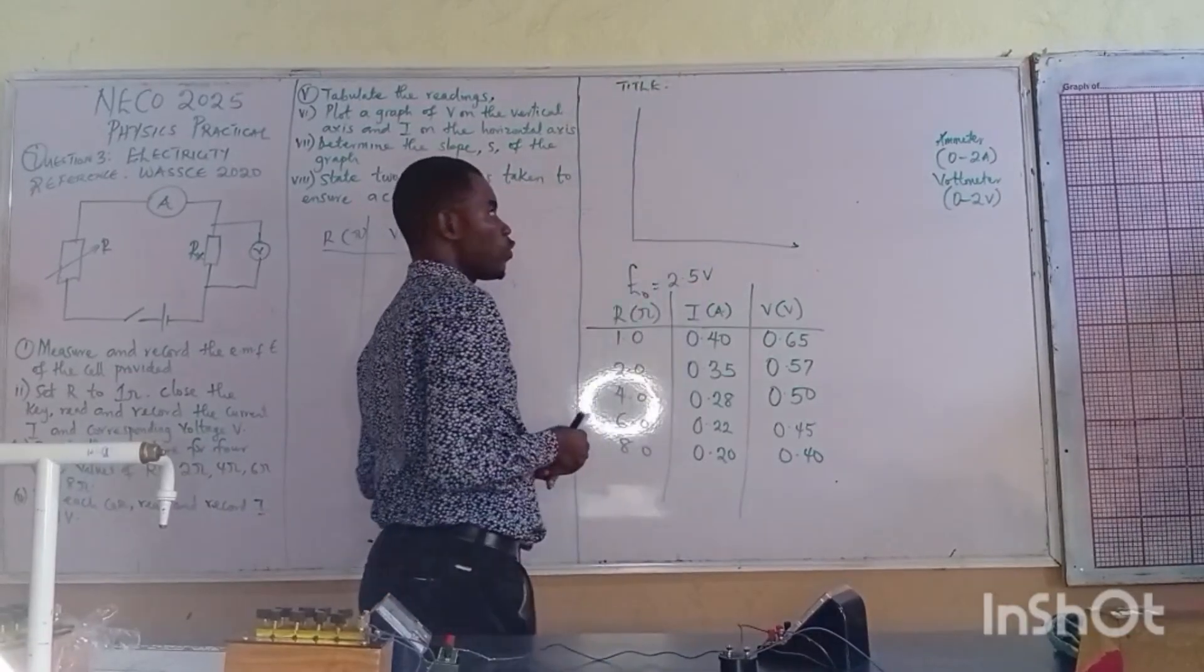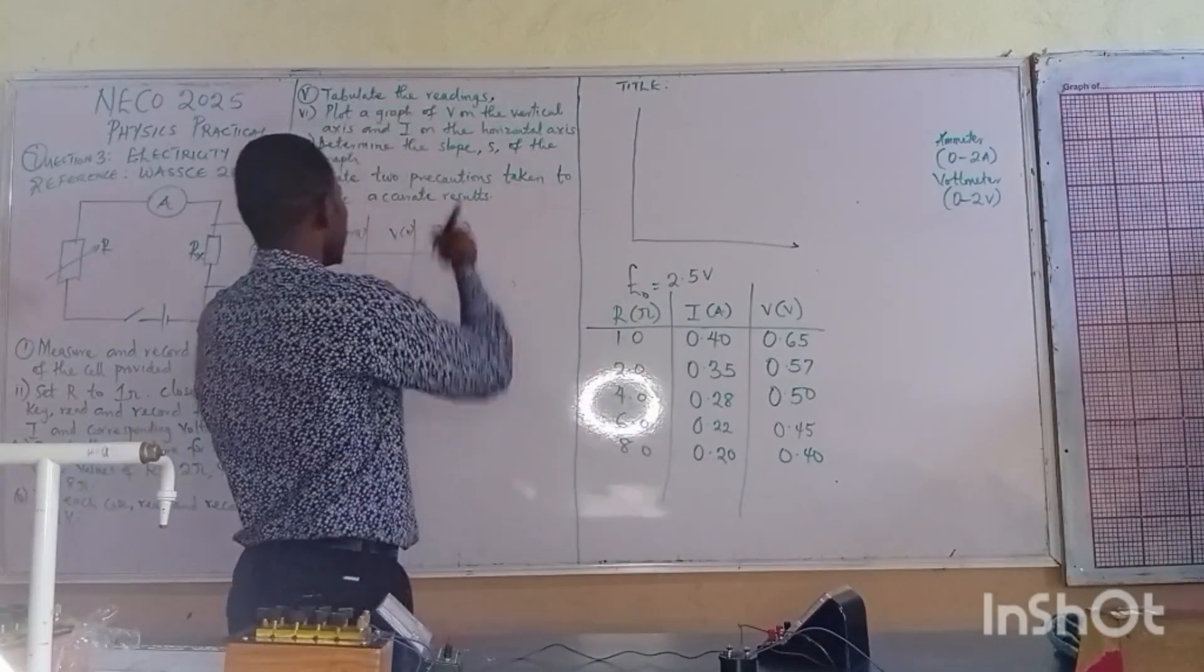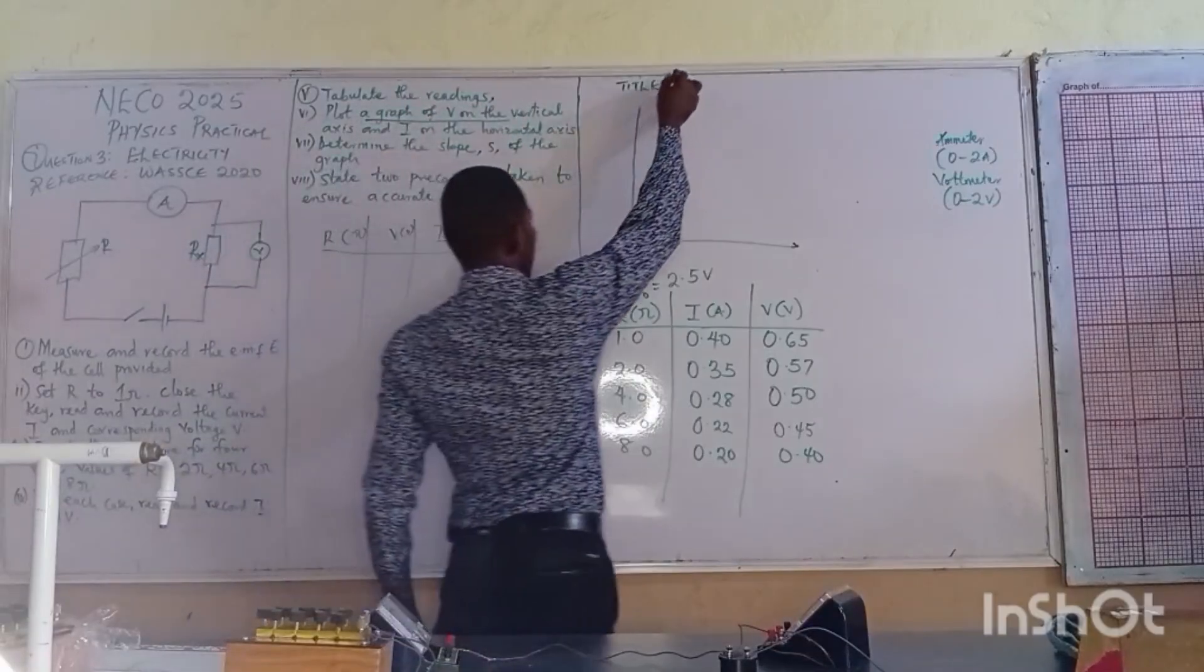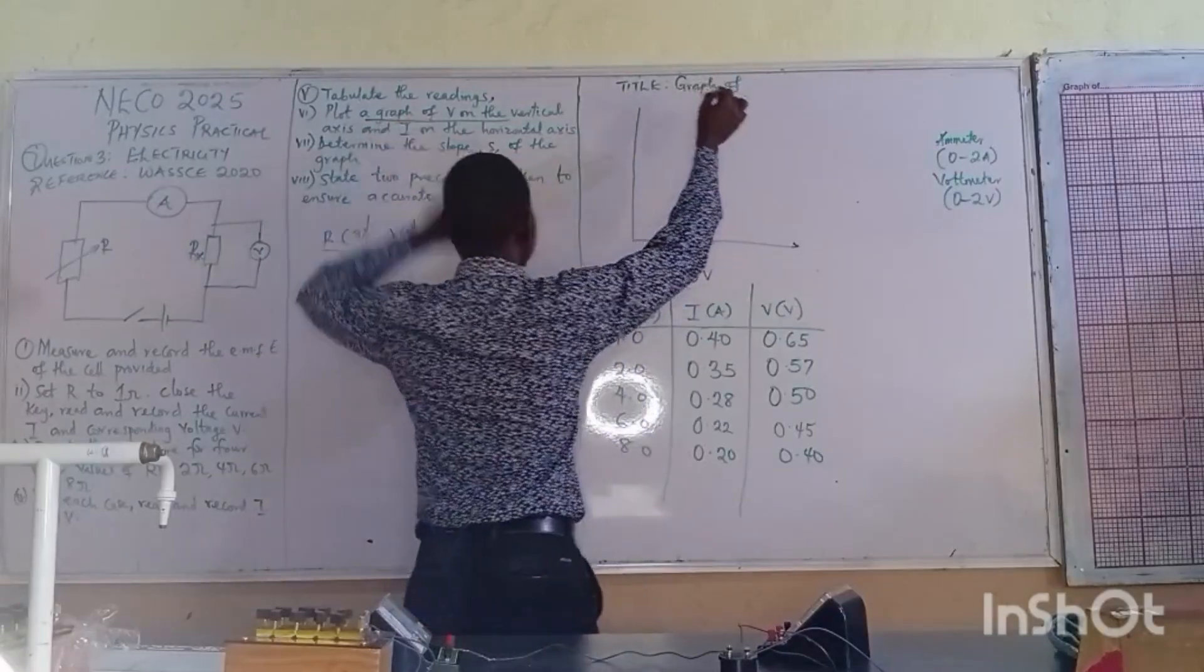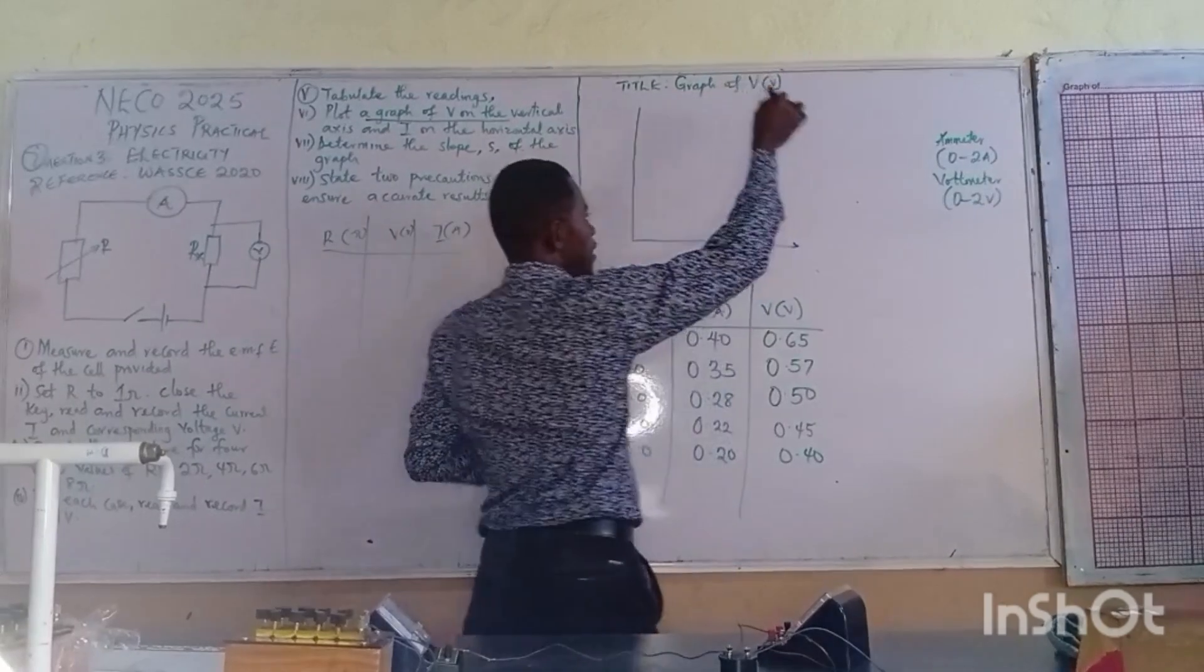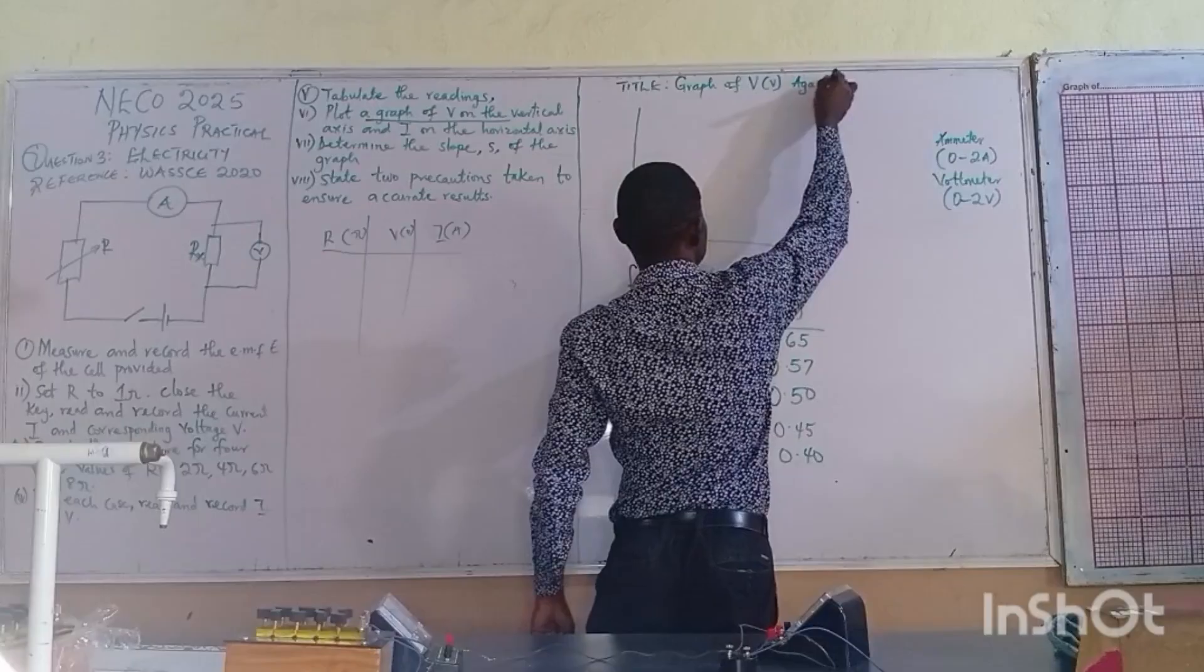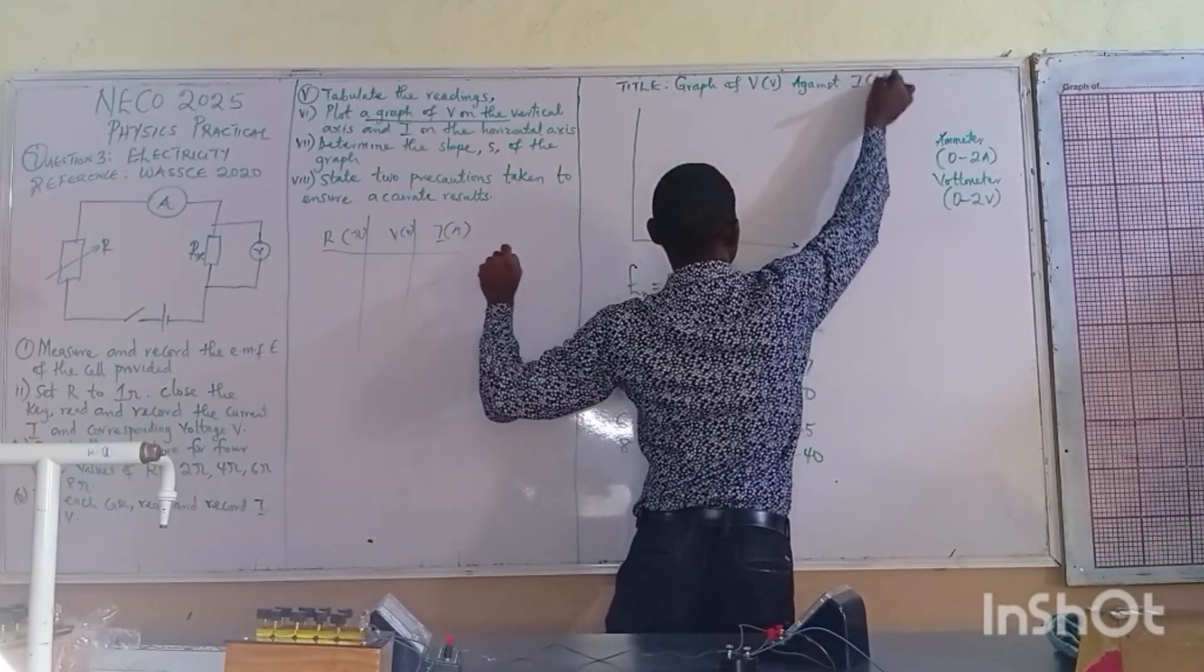The first thing we need to do about graph is our title. You don't need to struggle for title. The title of the graph is always in the question. The title is: graph of V against I, which is the ammeter.